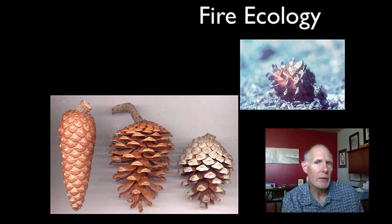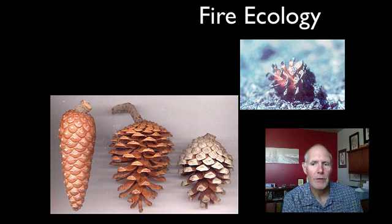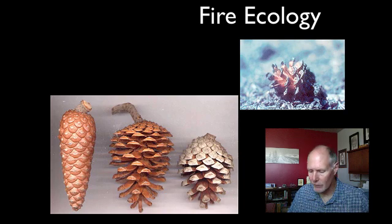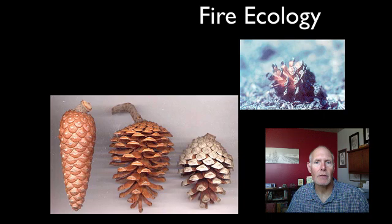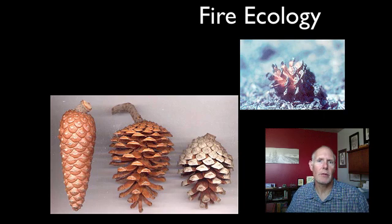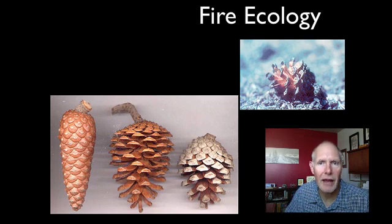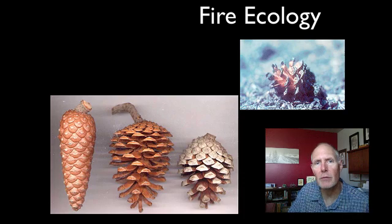Some of those seeds get burned up. You can see in that upper right-hand corner that sometimes those cones actually get burned totally up. But most of the time, those seeds are released down into the forest floor, where now the forest has been cleared of its undergrowth. All the extra dead trees are out of the way, and some of the plants on the ground — like the grasses and shrubs — have been burned away. So it makes a really nice environment for those seeds to begin to germinate, and that's exactly what happens.